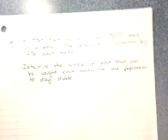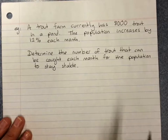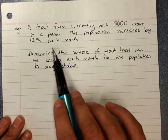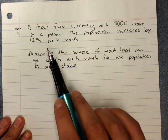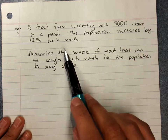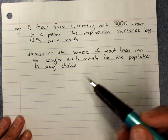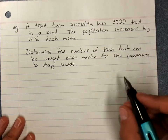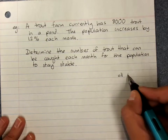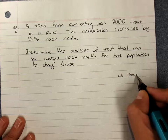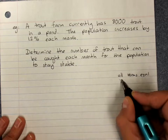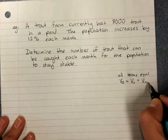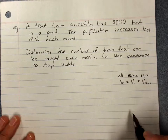An example of where it might actually be useful is when you want to keep a population stable. For instance, a population is increasing by 12% each month. One important property: because all terms are equal, V0 is the same as any other term, which is the same as the next term. This will be useful later.